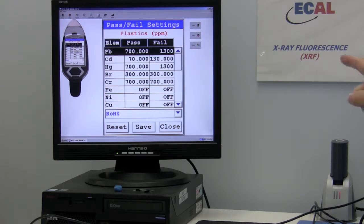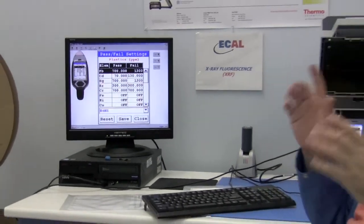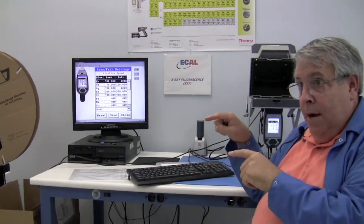If it's above 1,300, it's a definite fail. If it's below 700, it's a definite pass. If it's between the two, it says it's inconclusive.